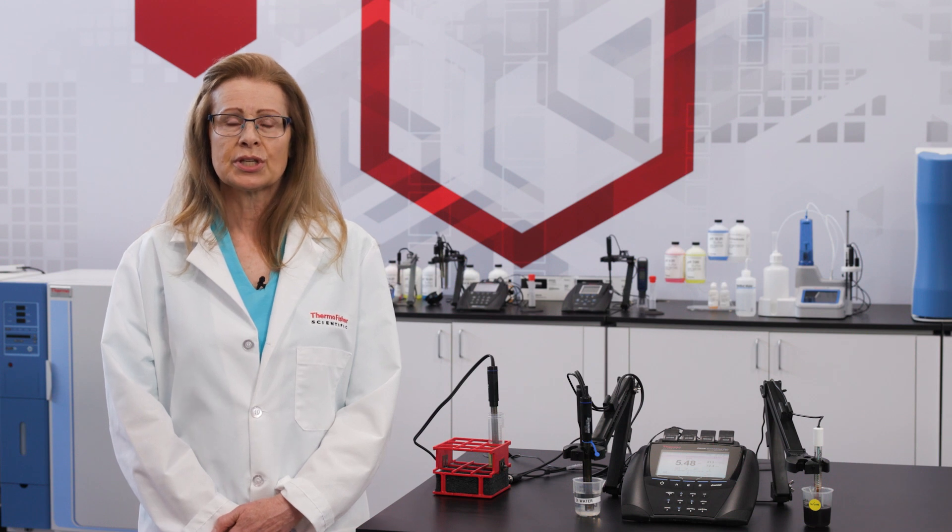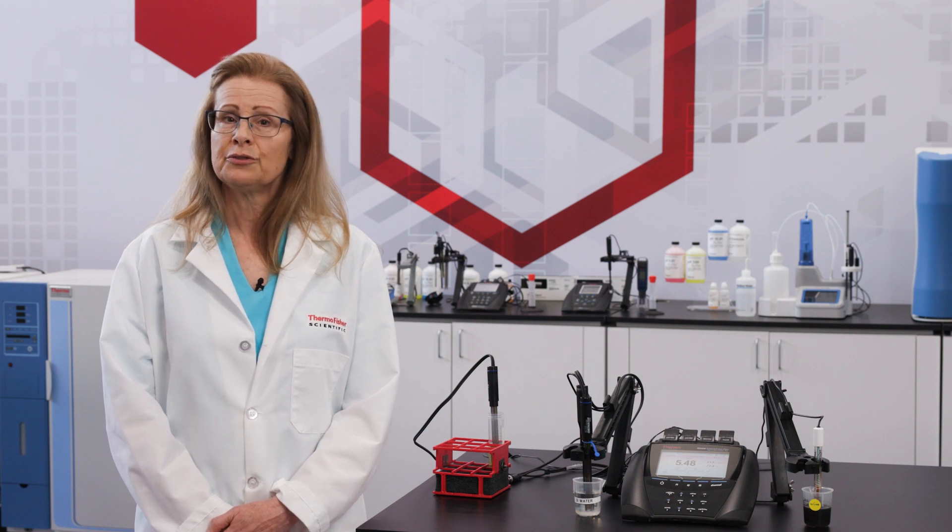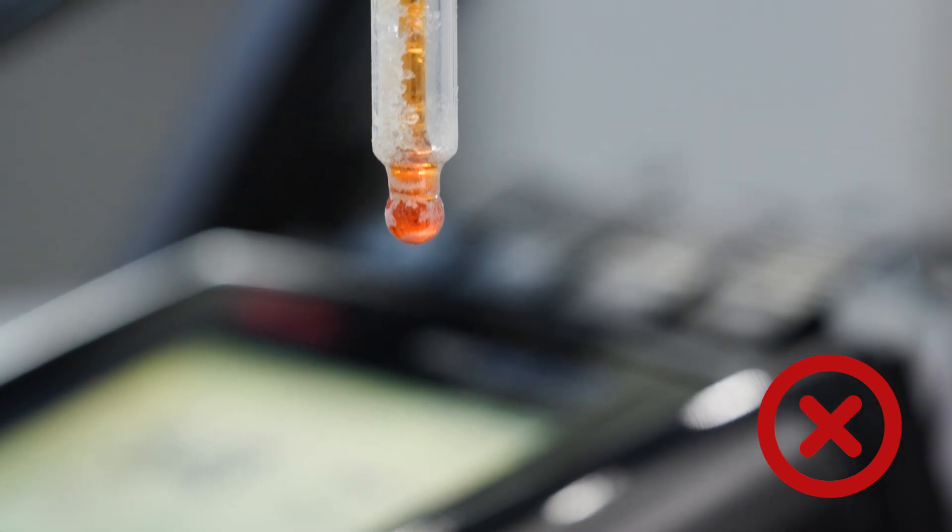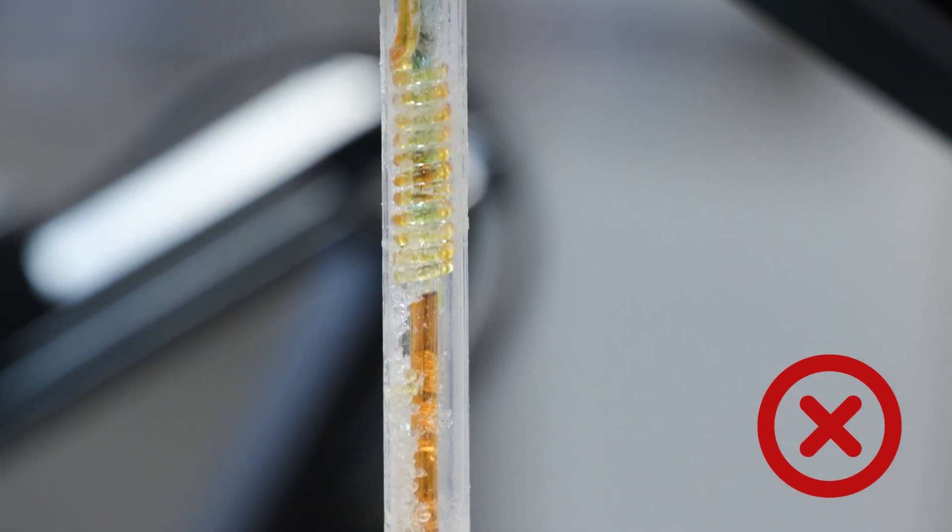Dry storage is even worse. These issues can cause the pH bulb to become depleted of ions or coated with components of the sample, and the fill solution can become compromised. Crystals will clog the junction and prevent good readings. A dry electrode will not perform at all.